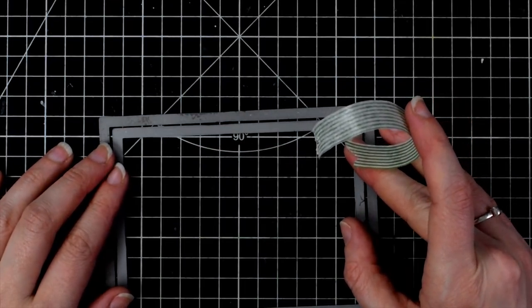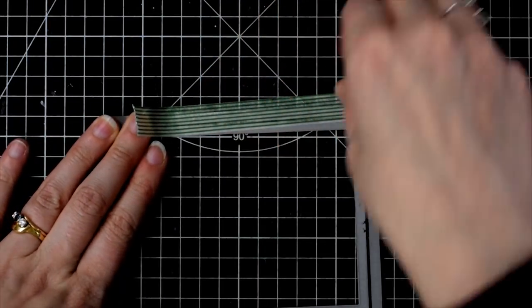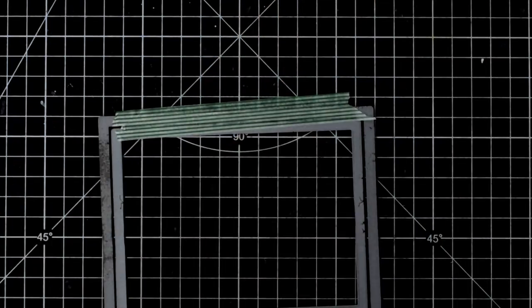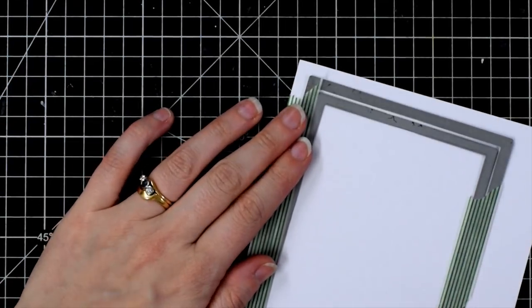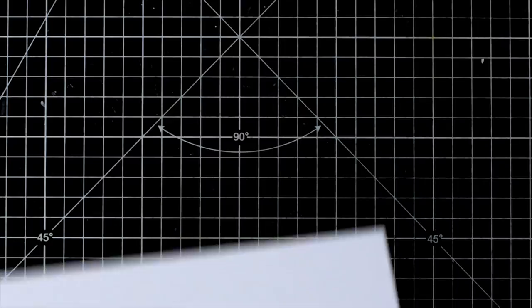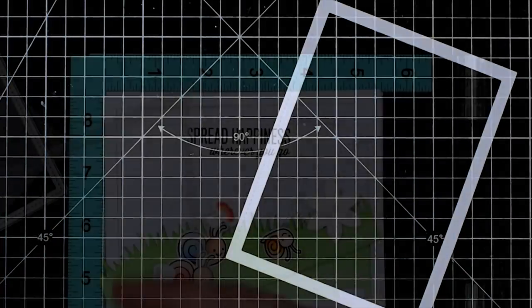Now I want to create a shaker card so I grabbed two rectangle dies. These are Lawn Fawn's large stitch rectangle die and small stitch rectangle die and I need to cut out a frame so that I can then build my shaker.